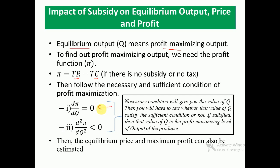The necessary condition gives you the value of q, and then you test whether that value of q satisfies the sufficient condition. If the sufficient condition is satisfied, then that value of q is the profit maximizing level of output. After getting the value of q, you can calculate the equilibrium price as well as maximum profit of the producer.